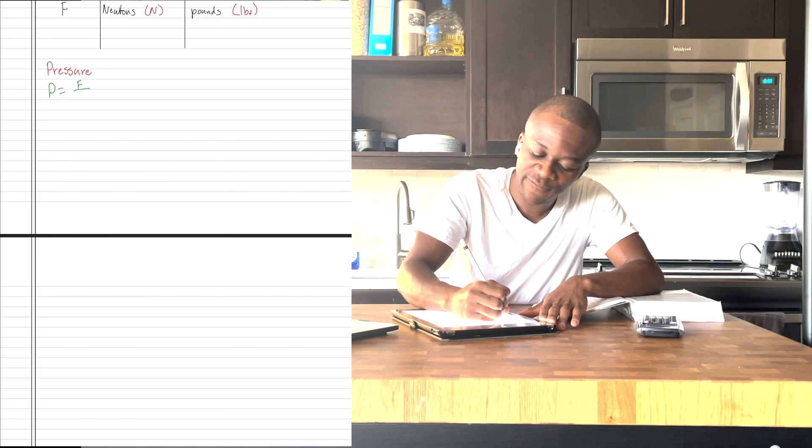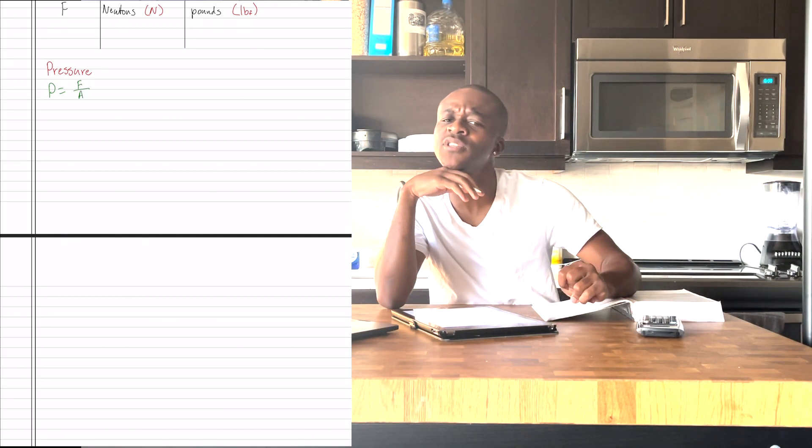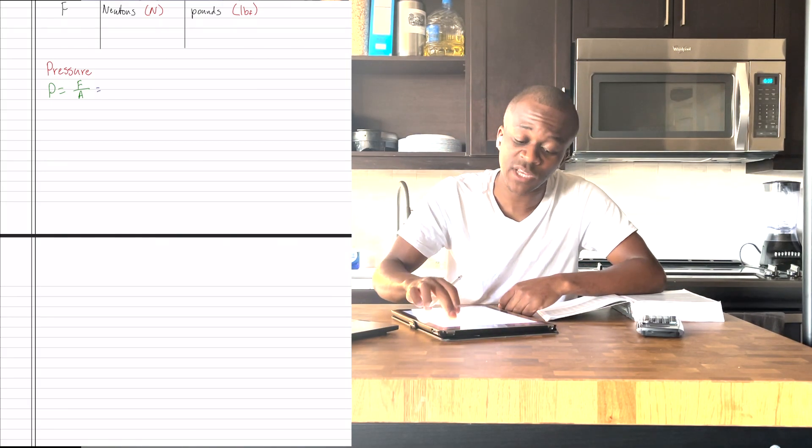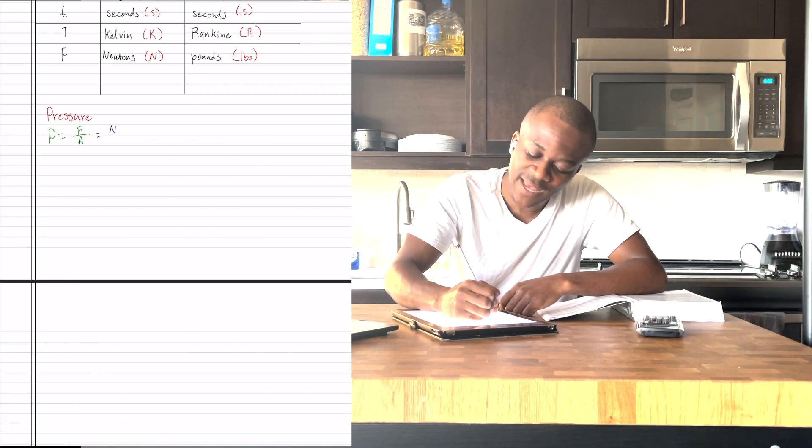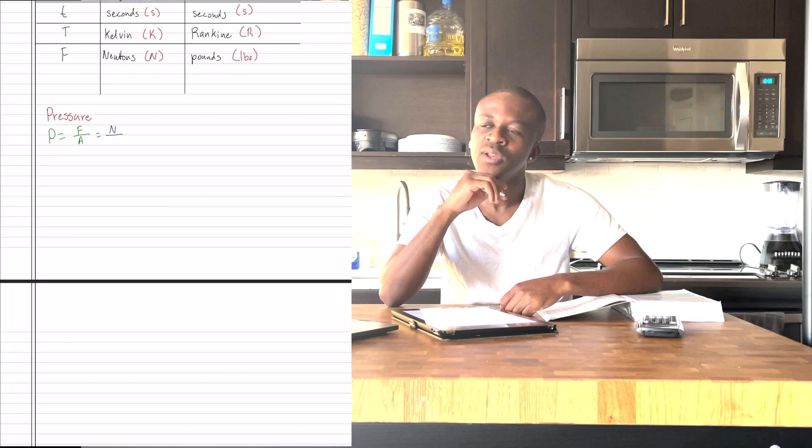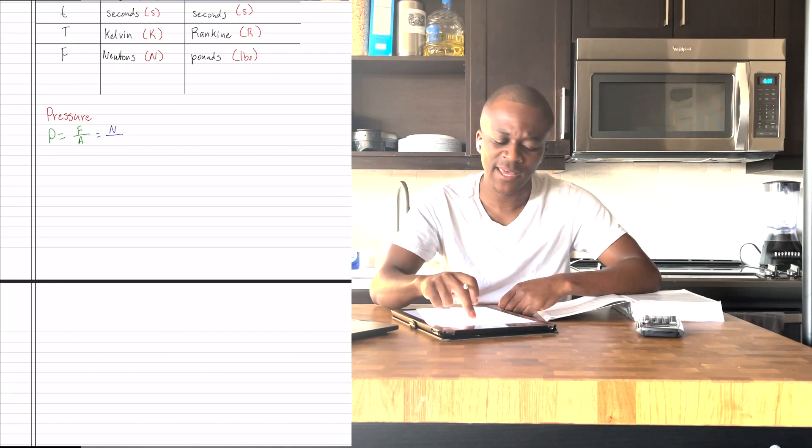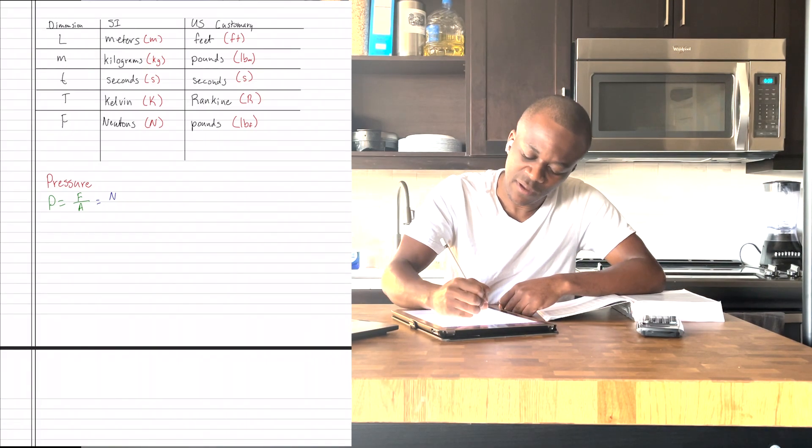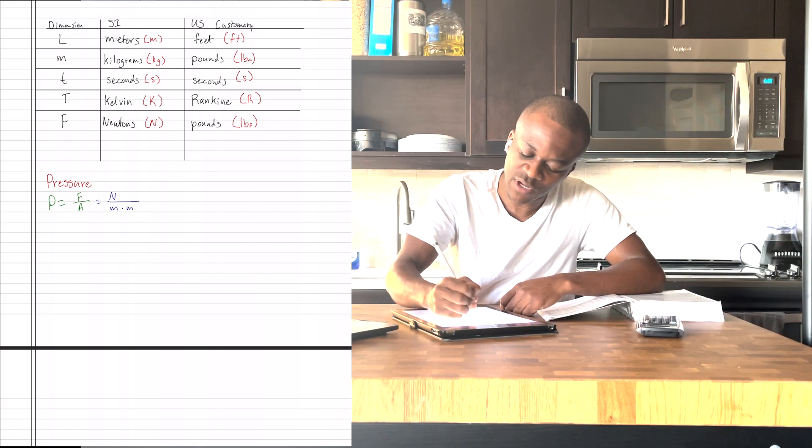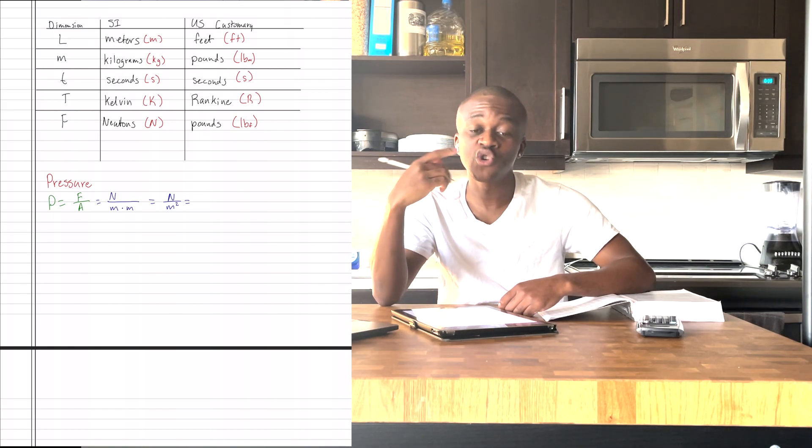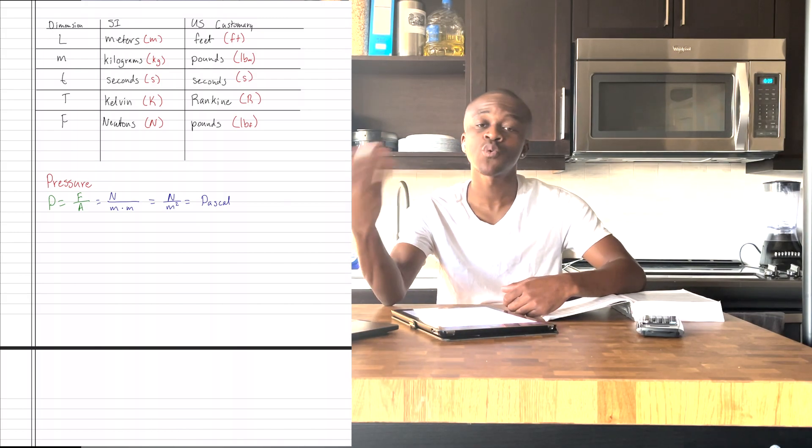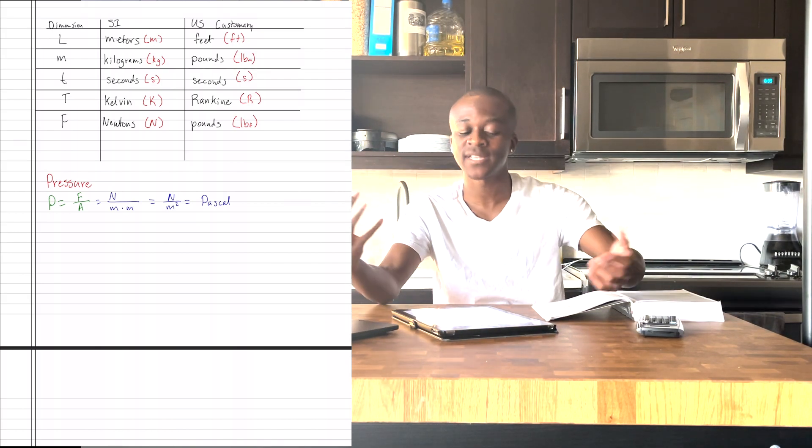Pressure can be denoted by P, and this is given by F over A. If I wanted to find out the units of pressure, what would I do? F is represented by Newtons. So I'll say it's N over area. What is the formula for area? Length times length. Length is given by meters. So if I have meters times meters, that would give me N over M squared. However, we shorten this to call it a Pascal. So Newtons per meter squared is the unit for pressure, but we call that a Pascal.